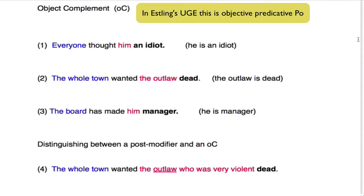Let's take a closer look at the object compliment, which sometimes provides a little bit of difficulty for some students. We look at some examples here. In number one: everyone thought him an idiot.